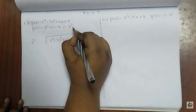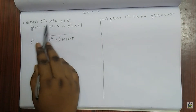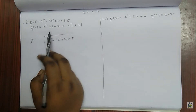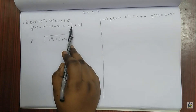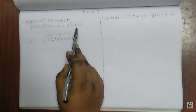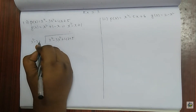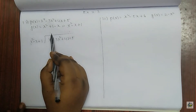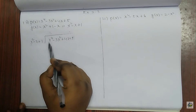We arrange the equation according to the power of x — x square will be the first because it has the highest power, then x, then the constant term. Now I have to put a term here. When the term is written here, these both will be multiplied to give this answer.